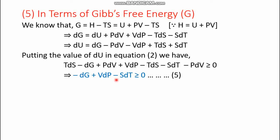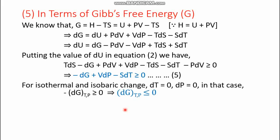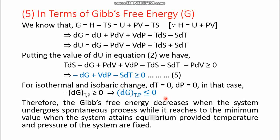For isothermal and isobaric change (dT = 0 and dP = 0), equation 5 reduces to -dG ≥ 0, or dG ≤ 0 at constant T and P. Therefore, Gibbs free energy decreases when the system undergoes a spontaneous process and reaches its minimum value when the system attains equilibrium, provided temperature and pressure are fixed. That is all for today's lecture on conditions for spontaneity and equilibrium.